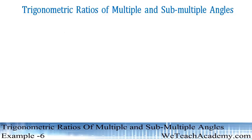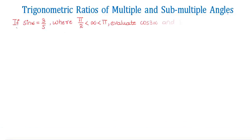Hello friends, welcome to Vedic Academy. In this section we are going to deal with an example on trigonometric ratios of multiple and submultiple angles. The given example is: if sin α = 3/5 where π/2 < α < π, then evaluate the value of cos 3α and tan 2α.